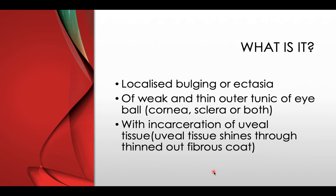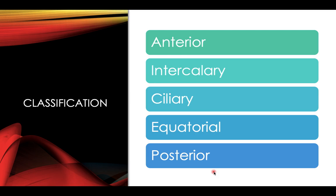The outer tunic of the eyeball involves the cornea and sclera. Staphyloma is either bulging or ectasia of the cornea or the sclera, or both together, with incarceration of the uveal tissue — the uveal tissue shines through the thinned-out fibrous coat.